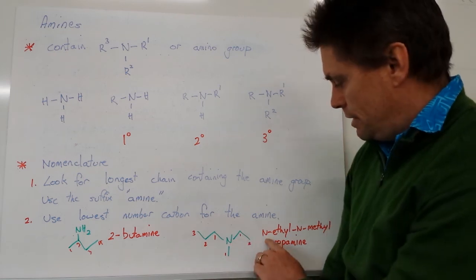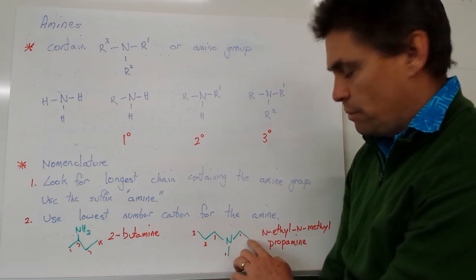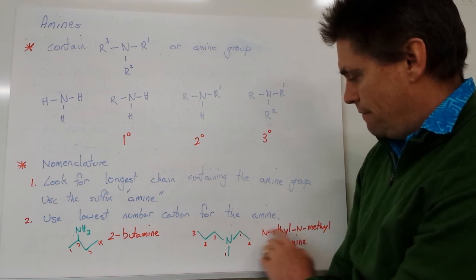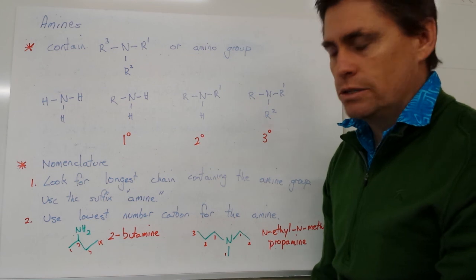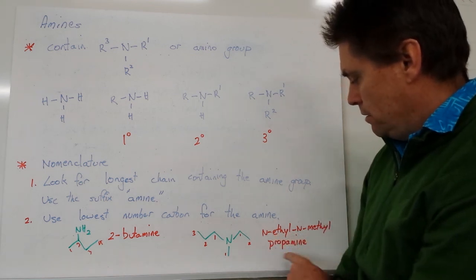And we have two other groups or two carbon groups coming off our nitrogen. And we denote these with an N. So in this case, we've got an N-ethyl. And we put this into alphabetical order. So we have N-ethyl, we have N-methylpropamine as our longest carbon group. So our molecule is N-ethyl-N-methylpropamine.